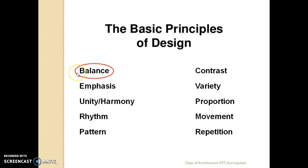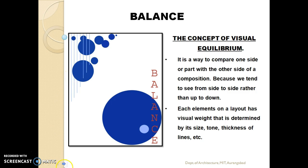Today we shall be discussing the basic principle of balance. What is the meaning of the word balance? It is a way to compare one side or part of a composition with the other side. Because we tend to see a composition from side to side rather than from up to down, each element on the layout has a visual weight that is determined by its size, tone, thickness of lines, color, etc.